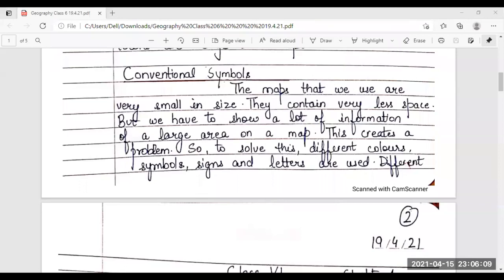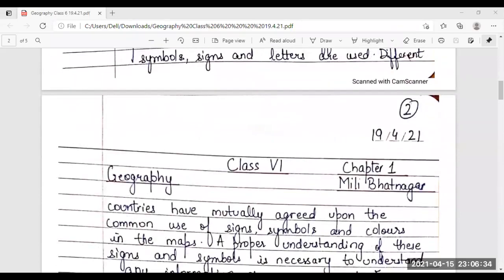Conventional symbols. The maps that we use are very small in size. They contain very less space. But we have to show a lot of information of a large area on a map. This creates a problem. So, to solve this, different colors, symbols, signs and letters are used.